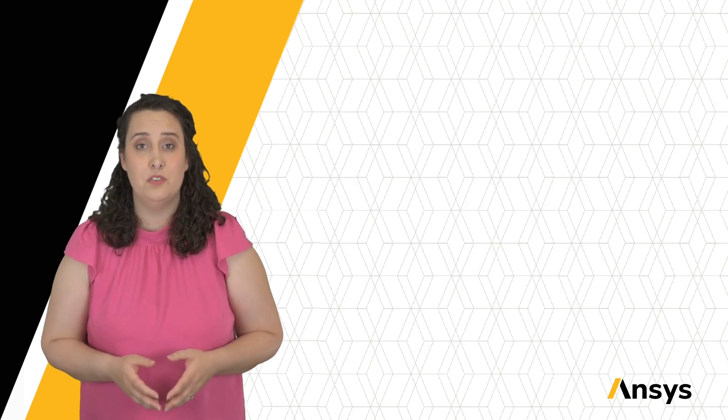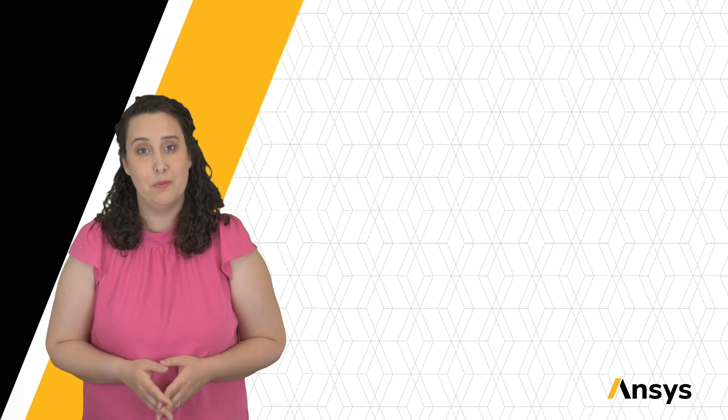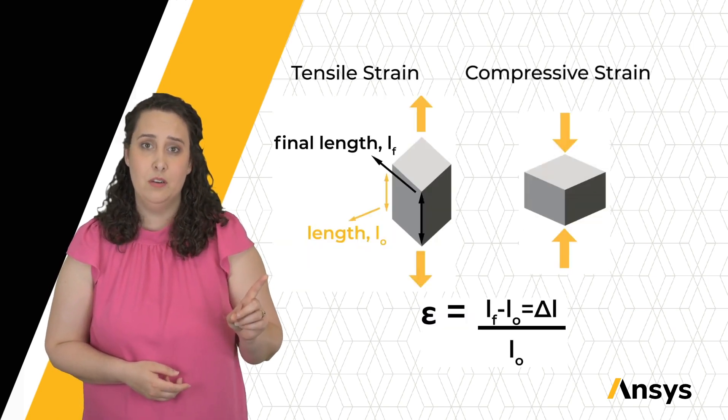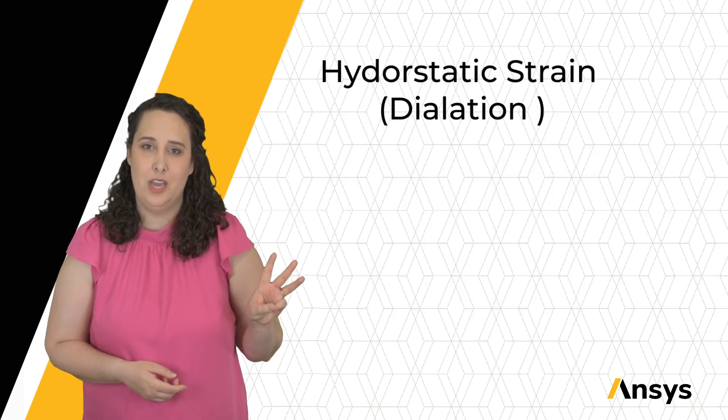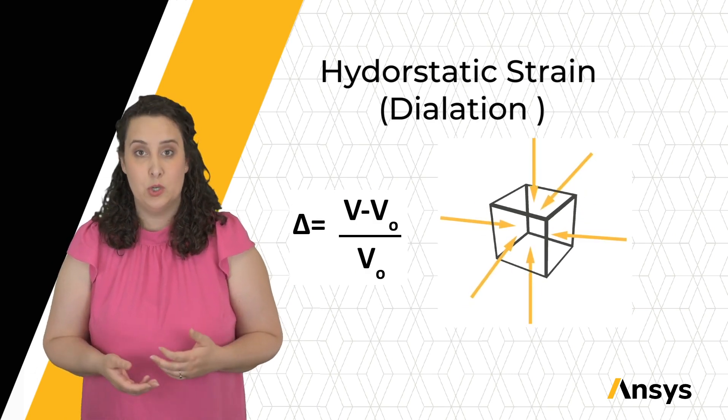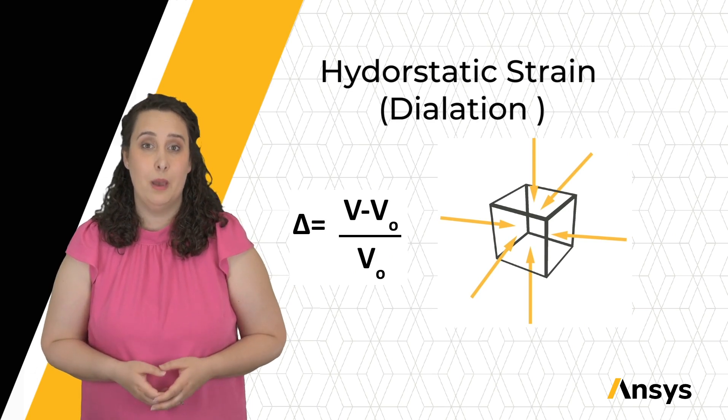Strain is the material's response to stress. Therefore we have three strains corresponding to our three stress states. We have tensile or compressive strain epsilon, shear strain gamma, and hydrostatic strain. This is called dilation and represents a volumetric change rather than a length change. This is represented by capital delta.